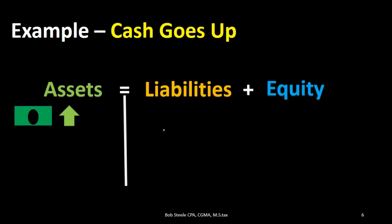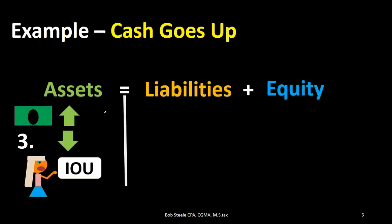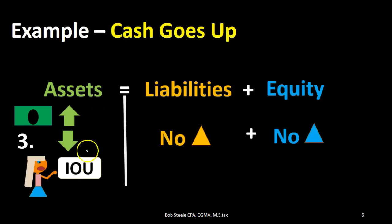A third option: assets go up with cash, but another asset also goes down. This means we have a transaction where one account is going up and one account is going down. Why might that happen? Maybe we received cash from an IOU — accounts receivable — so the receivable goes down and cash goes up. No change in liabilities, no change in equity. We'll see more examples of this; to really understand it, we just have to go through transaction examples over and over. Repetition is the key.